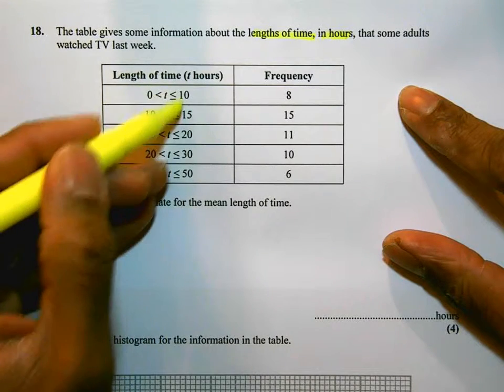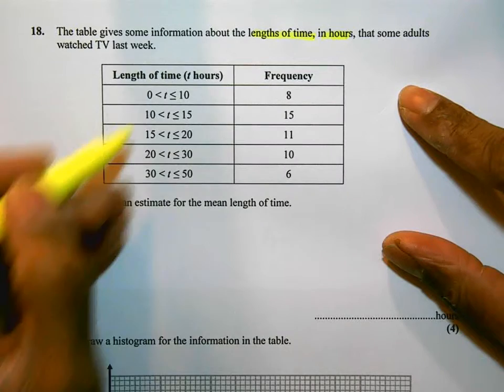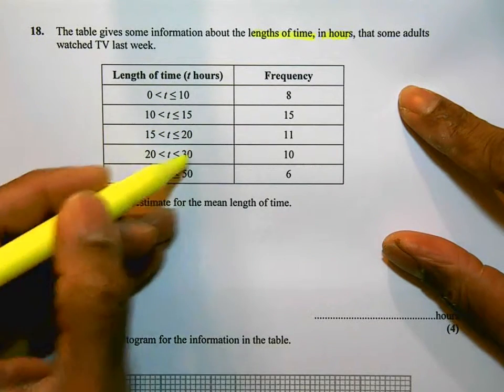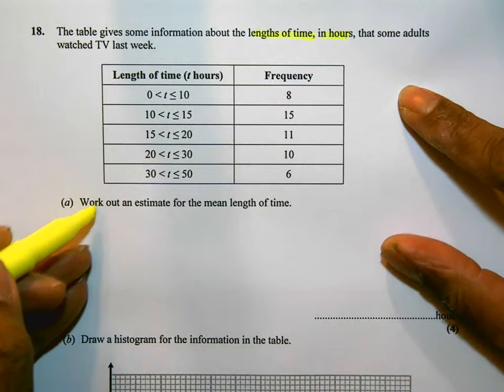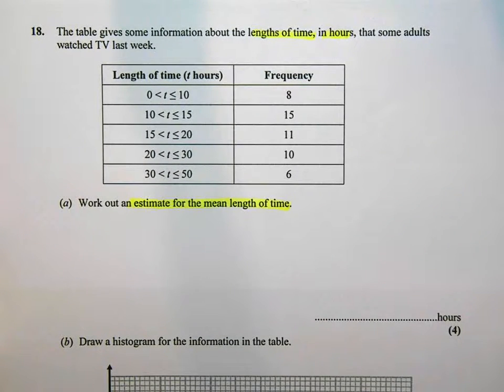One of the things I noticed is that the groups are of different sizes. 0 to 10, 10 to 15, 15 to 20, 20 to 30, 30 to 50. And we've got the frequencies over here. The question says work out an estimate of the mean time. So it's an estimated mean question, and this should be one that you're pretty familiar with.